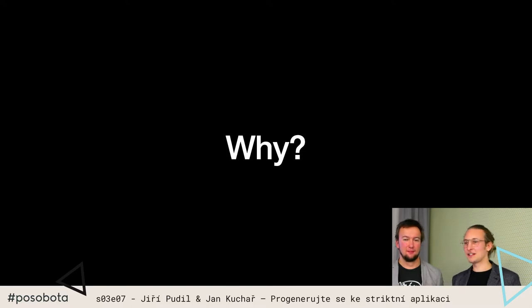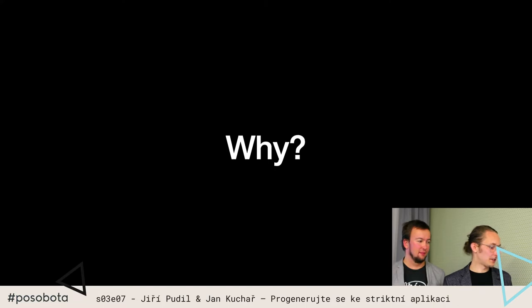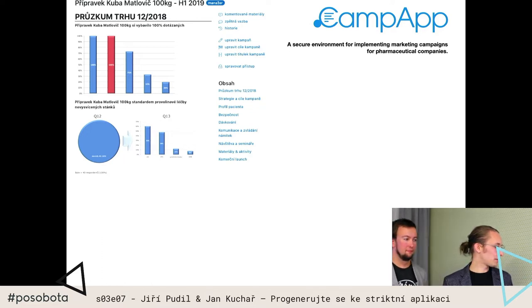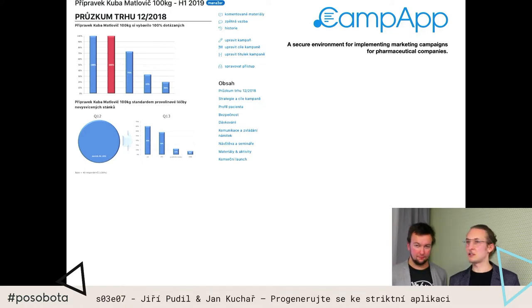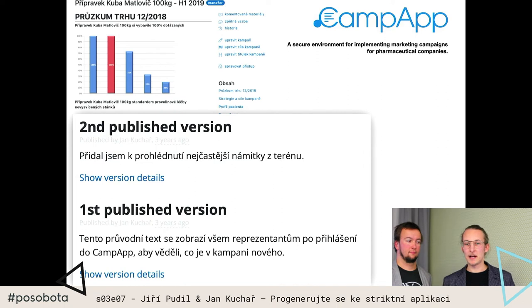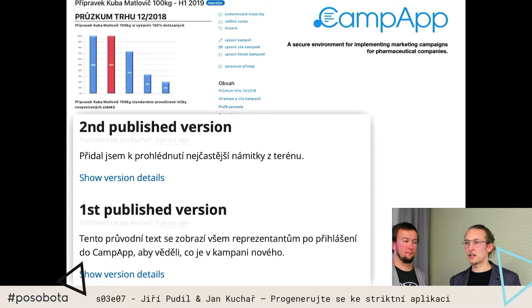Takže proč vůbec vznikl projekt Griffard Scaffolder? Čemu je to vlastně dobré? Vznikl proto, že vyvíjíme projekt Campup - to je nástroj na marketingové kampaně ve farmaceutických firmách. Co jsme potřebovali, je, když máme nějakou kampaň, což je v tomto případě strukturovaný text, abychom k tomu dokázali ukládat historii. Tím jsme se dostali k event sourcingu, což je tato přednáška.